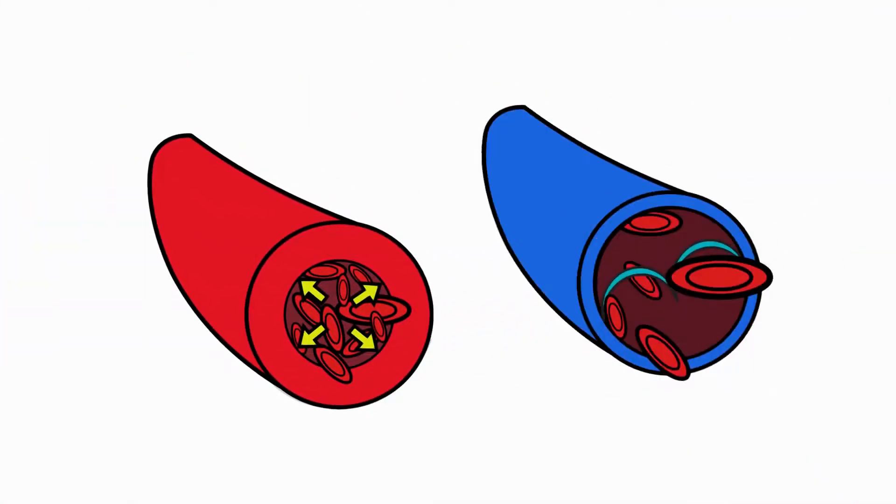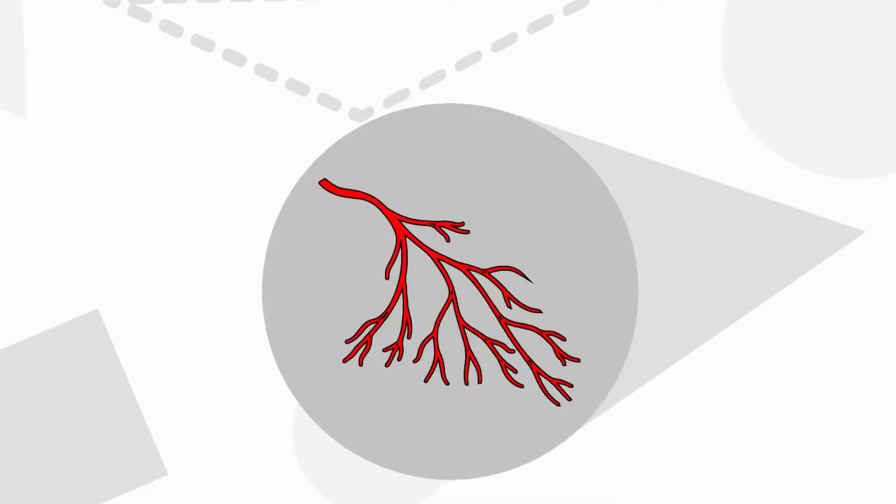Arteries and veins are important parts of our body. They carry blood all over our bodies, but they cannot reach every part. That's where the third type of blood vessel, capillaries, are used.